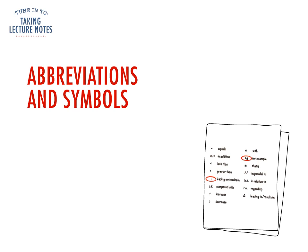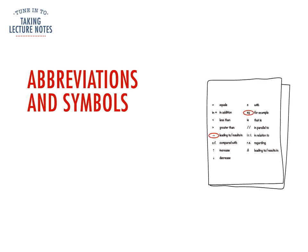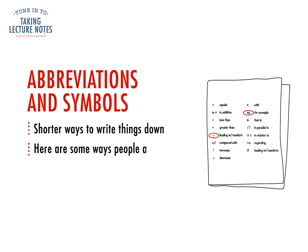Trying to get everything down quickly on paper can be a problem. A tip is to try using abbreviations and symbols instead of writing full words. For example, 'for example' can be written as EG, or an arrow symbol can show how one thing led to another. And since these notes are for you, you can even create some of your own.